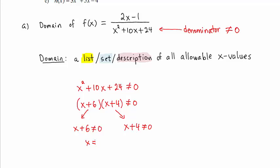Subtracting 6 from both sides, x cannot equal negative 6. And here, subtracting 4 from both sides, x cannot equal negative 4. So negative 6 and negative 4 are the non-allowable x values.